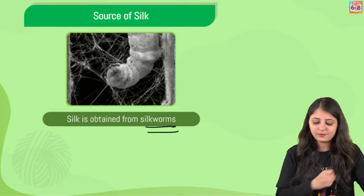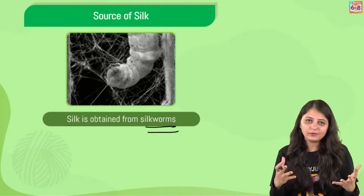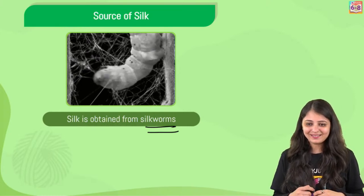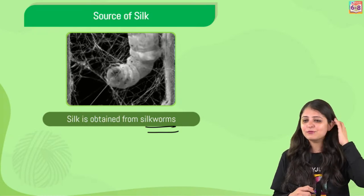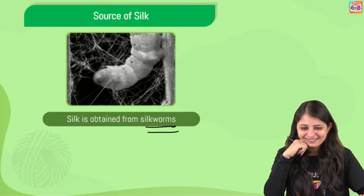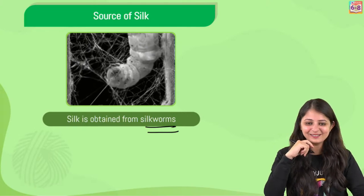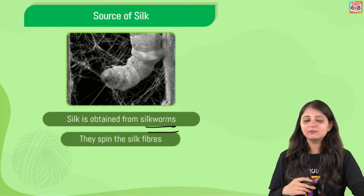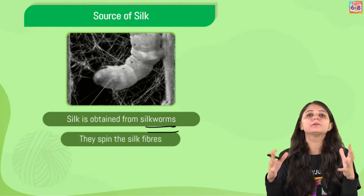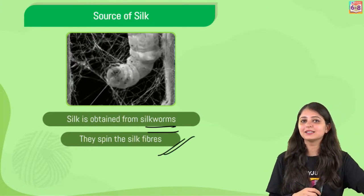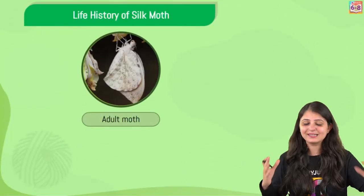Silk is obtained from silkworms. Silkworms are basically the larval form of the silk moth - the larval form is the active immature form of the insect. They spin the silk fibers. We've discussed a really interesting history - the life history of the silk moth.